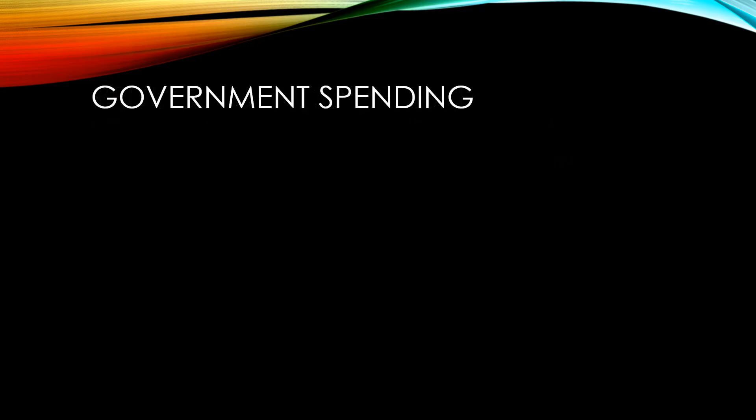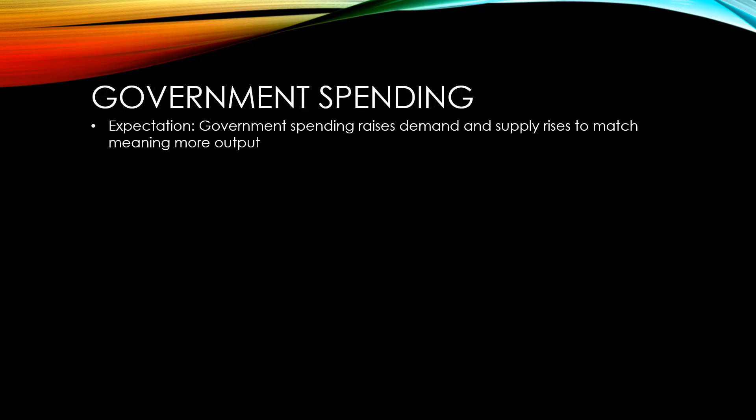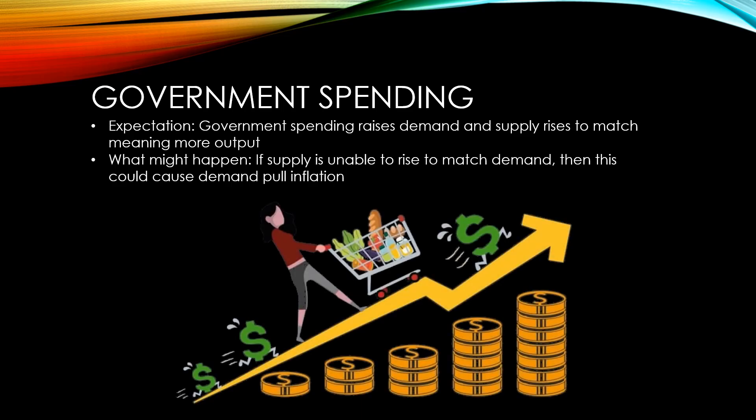The expectation with government spending is that as the government spends money, this raises demand and supply will rise to match, meaning greater output and therefore greater economic growth. What might happen is if supply is unable to rise to match demand, then this could cause demand-pull inflation. This is most likely to happen when the economy is near full employment.